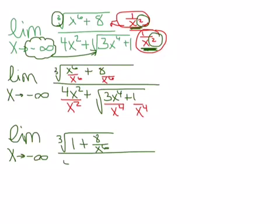In the bottom, 4x squared over x squared is 4, plus in the square root, the x to the 4ths are going to cancel, so this is just left with a 3, and then 1 over x to the 4th remains.